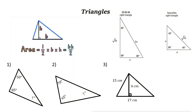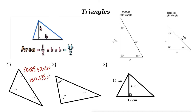In any triangle, the sum of all angles is 180 degrees. For example, if one angle is 50 and another is 85, we're looking for the third angle. The sum of 50 plus 85 plus the missing angle X equals 180. So 180 minus 135 equals 45, so this angle is 45 degrees.